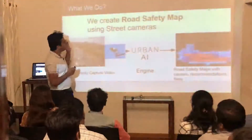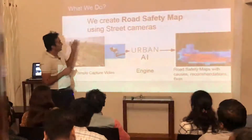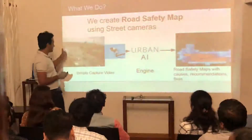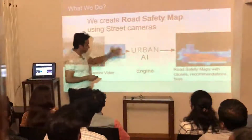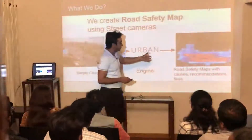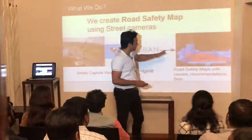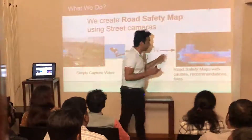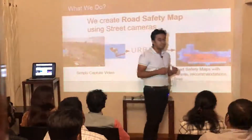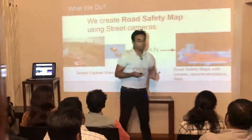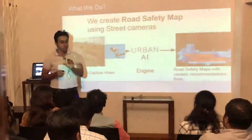What we do is create road safety maps using street cameras. It's pretty simple — you get a camera feed like this, we run it through our engine, and then you get this as an outcome. This is a top view of your roads, highlighting each and every spot as to what the problem is with that spot, particularly around road safety.